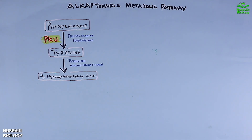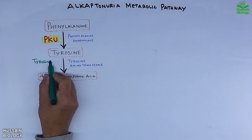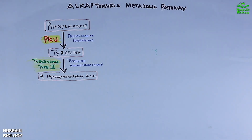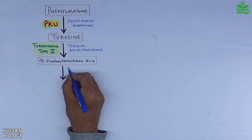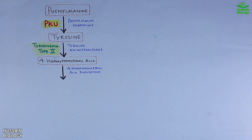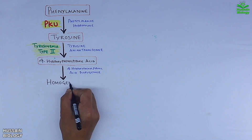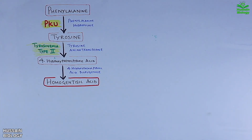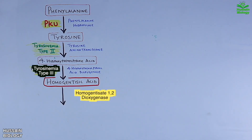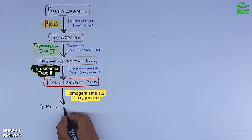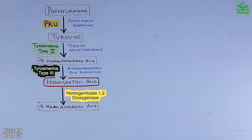Tyrosine is acted upon by tyrosine aminotransferase enzyme to yield 4-hydroxyphenylpyruvic acid. If this aminotransferase is missing, that condition is termed tyrosinemia type 2. Next, 4-hydroxyphenylpyruvic acid dioxygenase converts it into homogentisic acid; if this enzyme is missing, that leads to tyrosinemia type 3. Homogentisate 1,2-dioxygenase then converts homogentisic acid into 4-maleylacetoacetic acid; if this HGD enzyme is missing, that condition is alkaptonuria.